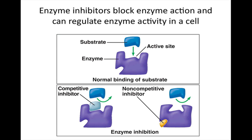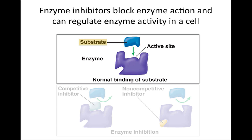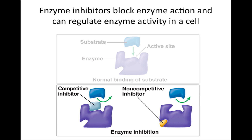Enzyme inhibitors block enzyme action and can regulate enzyme activity in a cell. In normal binding, a substrate binds to the active site of the enzyme. There are two types of inhibition. A competitive inhibitor binds to the active site, preventing the substrate from binding. In the case of a non-competitive inhibitor, the inhibitor does not compete for the active site but rather binds to a different location on the enzyme, which changes the shape of the active site and prevents the substrate from binding.